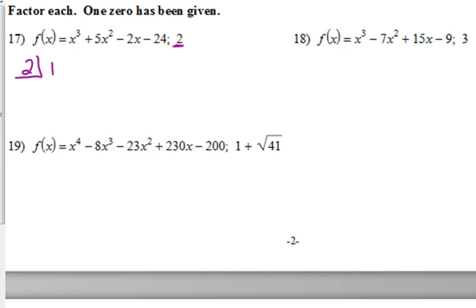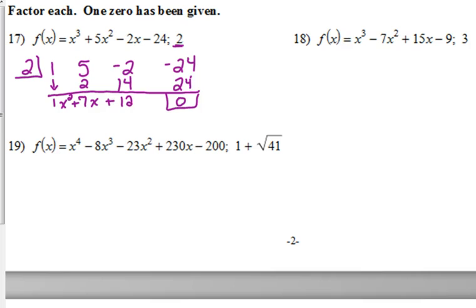If 2 is one of our zeros, let's do synthetic division on this. x cubed has a coefficient of 1, x squared has a coefficient of 5, x is negative 2, the constant is negative 24. Bring down the 1. 1 times 2 is 2, add, we get 7. Multiply, 7 times 2 is 14. Add, negative 2 plus 14 is 12. Multiply, 12 times 2 is positive 24. That gives us a remainder of 0, which it should, because 2 is one of our zeros.